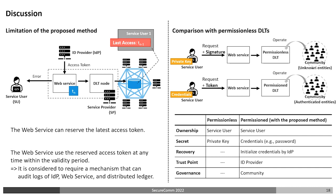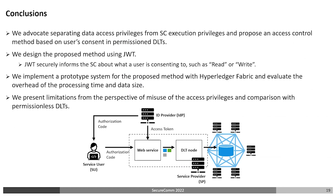The difference in the form of the community is also noteworthy. Permissioned DLTs expect governance by the community, while permissionless DLTs only expect the goodwill of unspecified entities and have no clear governance. In conclusion, we advocate separating data access privileges from smart contract execution privileges and propose an access control method based on user consent in permissioned DLTs. We designed the proposed method using JWT, which is used to securely inform the smart contract what the user consents to. Finally, we discussed the misuse of access privileges and comparison with permissionless DLTs. My presentation is over. If you want to know more about our research, you can read the full paper or email me. Thanks for listening.